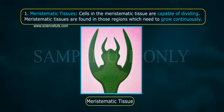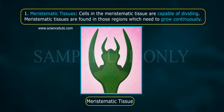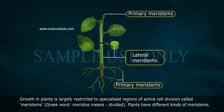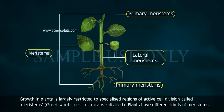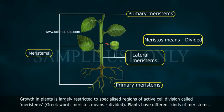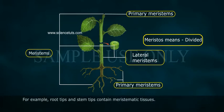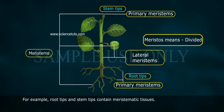Meristematic tissues. Cells in the meristematic tissue are capable of dividing. Meristematic tissues are found in those regions which need to grow continuously. Growth in plants is largely restricted to specialized regions of active cell division called meristems. For example, root tips and stem tips contain meristematic tissues.